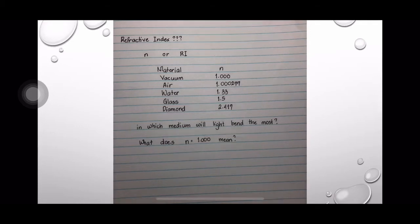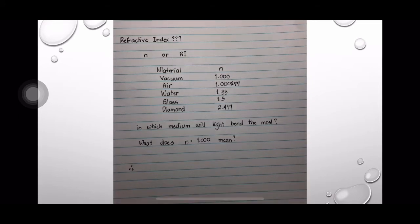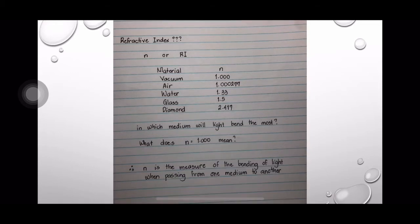Another question: what does n = 1 mean? It means that the light ray is not bent as it passes through this medium. Therefore, refractive index, or n in other books, is the measure of the bending of light when passing from one medium to another. Refractive index has no unit.